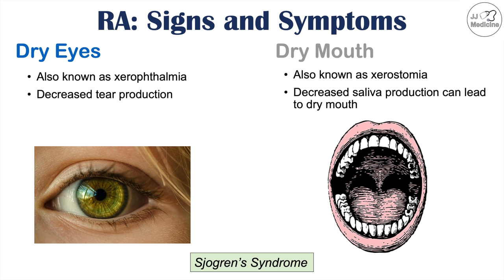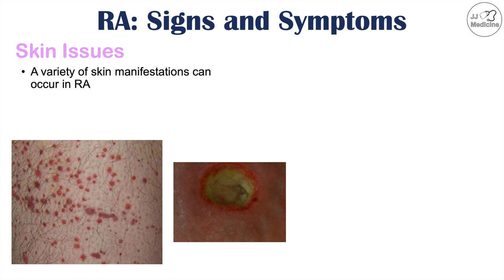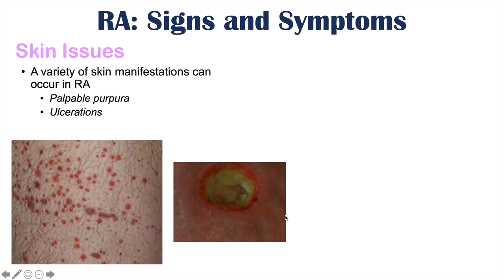Both dry eyes and dry mouth are features of secondary Sjogren's syndrome, which can occur in patients with rheumatoid arthritis — these two conditions are associated with one another. Skin manifestations can also occur, including palpable purpura — raised superficial bleeding under the skin that can be felt — and ulcerations. These skin findings are more likely to be present on the lower limbs.